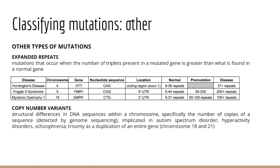Beyond these three classification approaches, there are some other types of mutations to consider. Expanded repeats — or trinucleotide repeats — are mutations that occur when the number of triplets present in a mutated gene is greater than that number found in a normal gene. Trinucleotide repeats are responsible for a handful of repeat expansion diseases, about 20 in total, commonly with an underlying neurodegenerative or neuromuscular symptom framework.